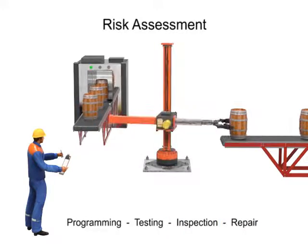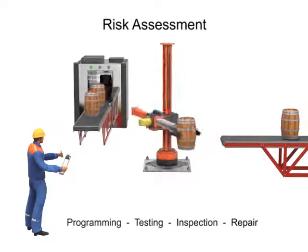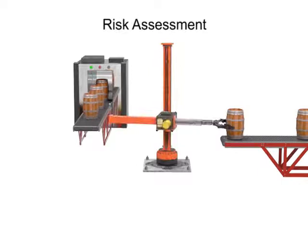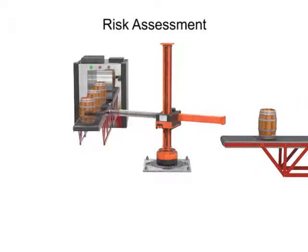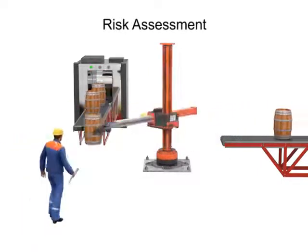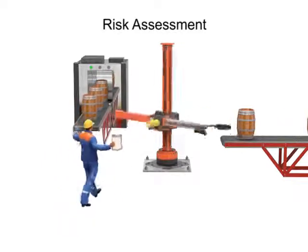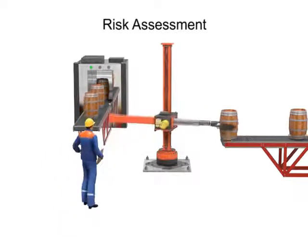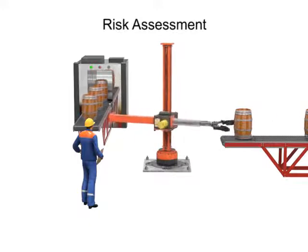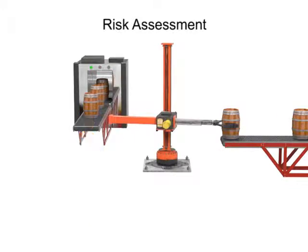By system design, robots rarely need human interaction during normal use and operation. But when programming, testing, inspection, or repair is required, humans are more likely to be in the robot's work area or work envelope. Unauthorized access to the robot's work envelope can be hazardous to personnel.